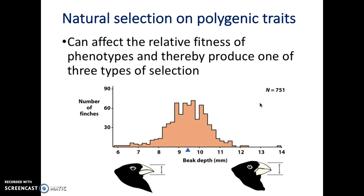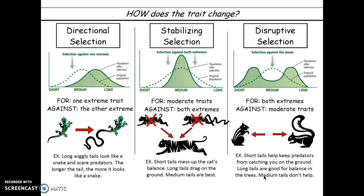Natural selection can affect the relative fitness of phenotypes and thereby produce one of three types of selection. This picture shows the initial distribution of beak depth, and there are three ways it can change depending on what exactly happens within the population. Those three possible ways are: directional selection, stabilizing selection, and disruptive selection.